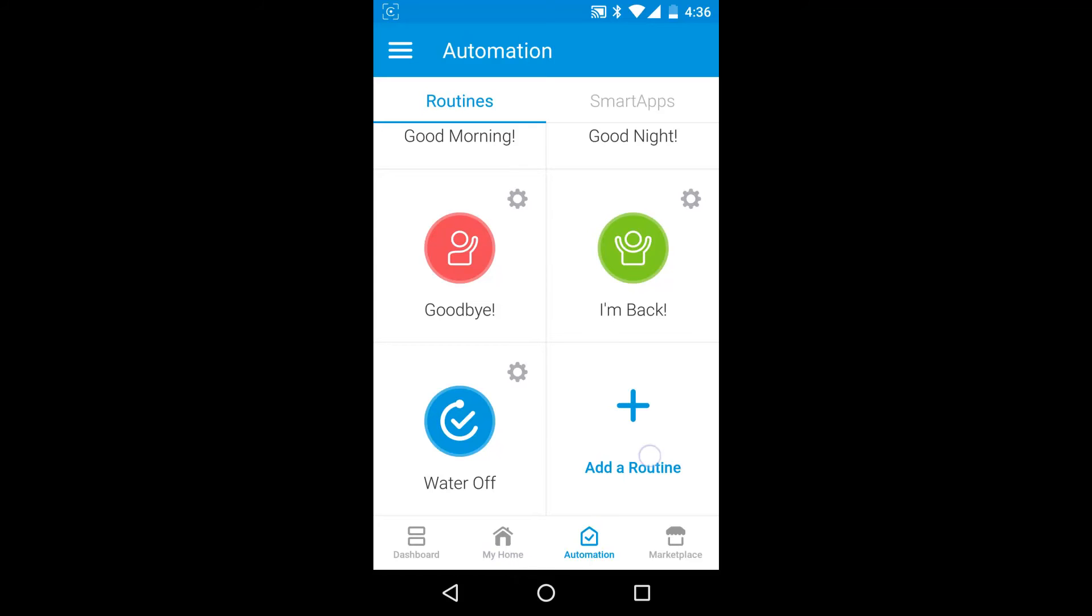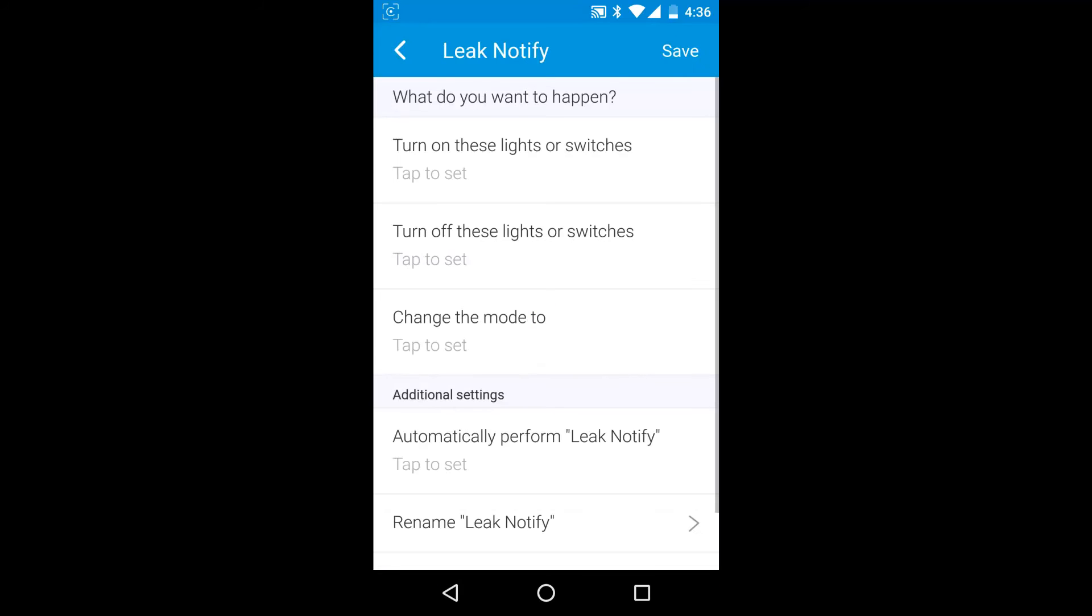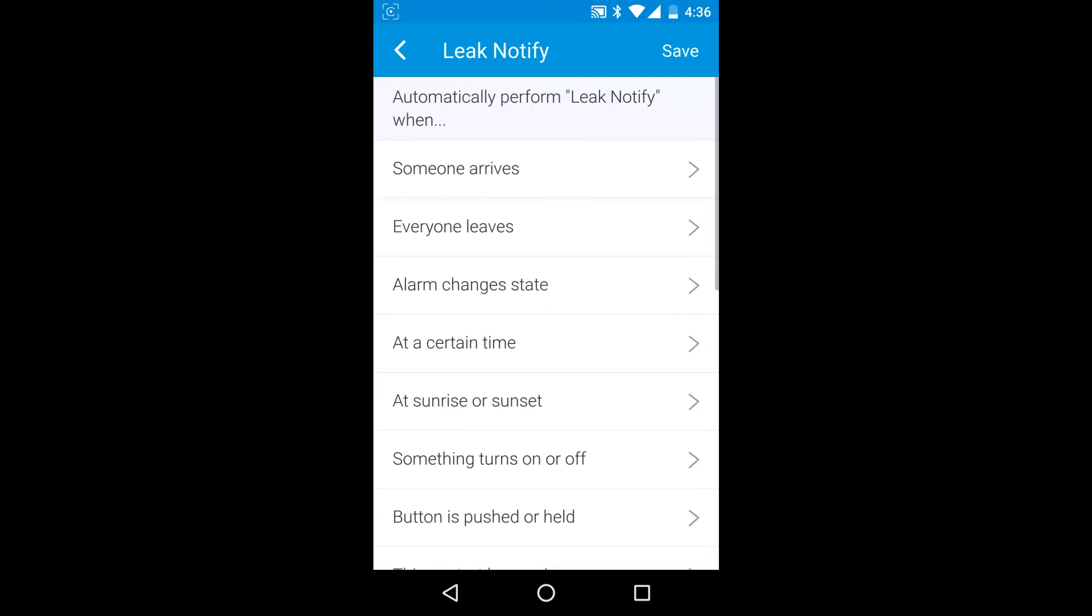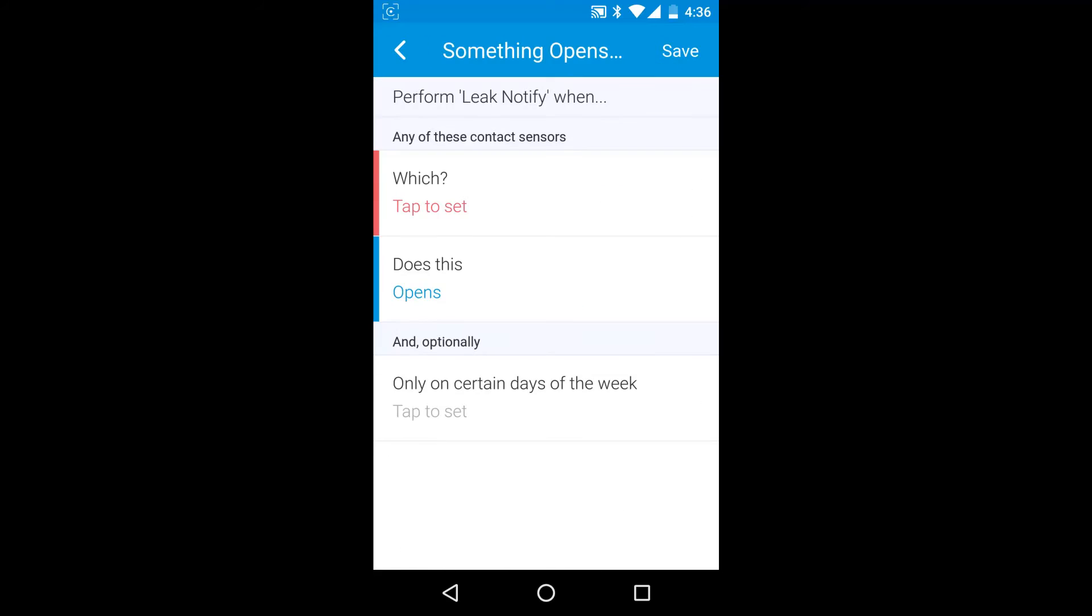Let's add another routine to send a notification if water is detected by the leak sensor. We'll name this routine Leak Notify. Tap Automatically Perform Leak Notify to set the trigger. Scroll down the list to something opens or closes.